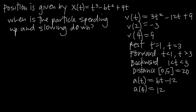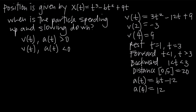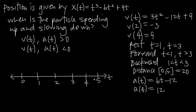To figure out when the particle is speeding up and when it's slowing down, we examine the velocity and acceleration functions together. If velocity and acceleration are both positive or both negative — that is, they have the same sign — the particle is speeding up. If they have opposite signs, the particle is slowing down. We need to identify where velocity is positive and negative and where acceleration is positive and negative. We'll indicate velocity in orange and acceleration in green on a number line.